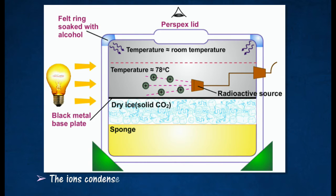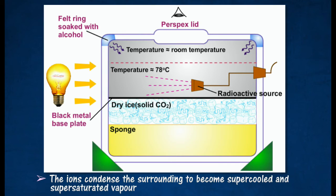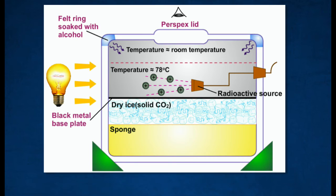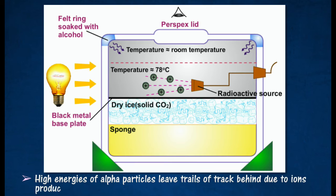The formed ions act as condensation nuclei, condensing the surrounding supersaturated vapor. The surrounding mixture of air and alcohol vapor forms a mist. High-energy alpha particles leave trails of tracks behind due to ions produced along their path.